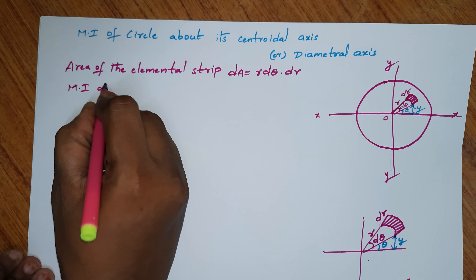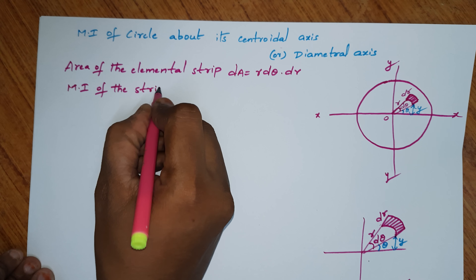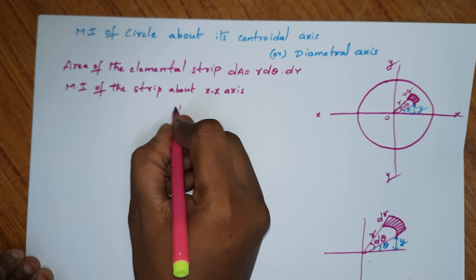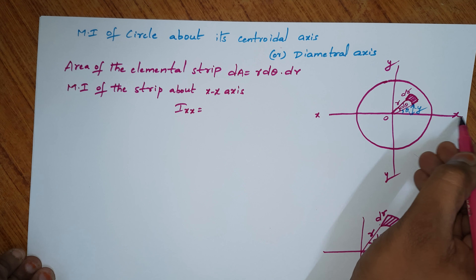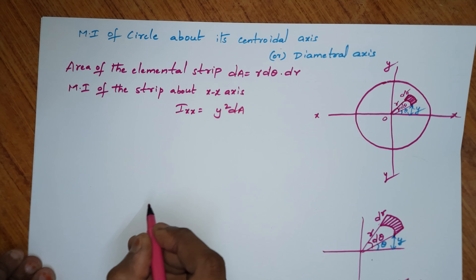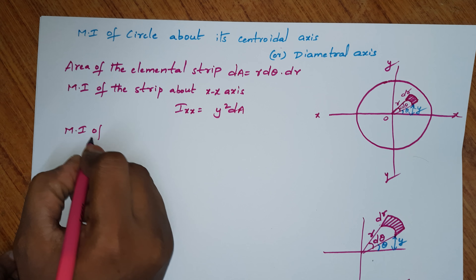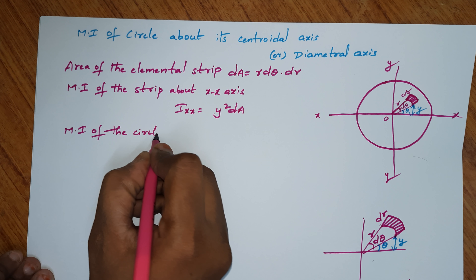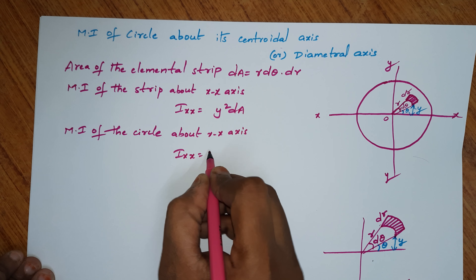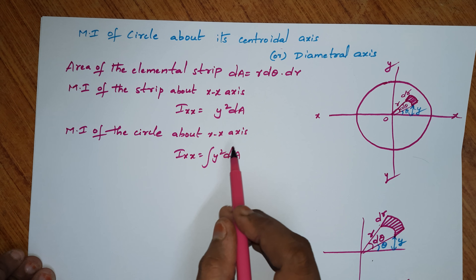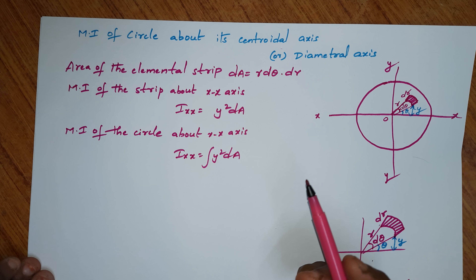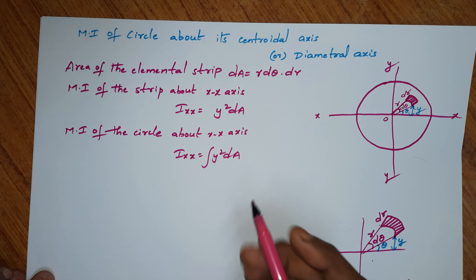Now, the moment of inertia of the strip about the XX axis is dIxx = y²·dA. And the moment of inertia of the circle about the XX axis is Ixx = ∫y²·dA. To get the total moment of inertia of the circle, we integrate the strip's moment of inertia within the limits of the circle.